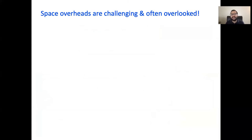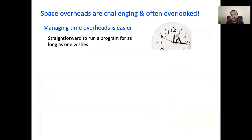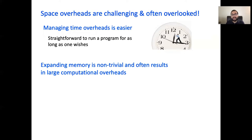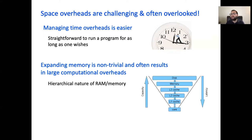I want to emphasize that time and space of the prover are both very important, and it would be unfair to trade one over the other. But time overheads are easier to manage — you can just let the prover run for as much time as possible. Comparatively, memory overheads are challenging. Expanding memory is non-trivial due to the hierarchical nature of modern computer systems, and often the overall running time depends on parameters like cache efficiency, which are very hard to tame. Hopefully, by this point you're convinced that the space of the prover is an important resource to consider.